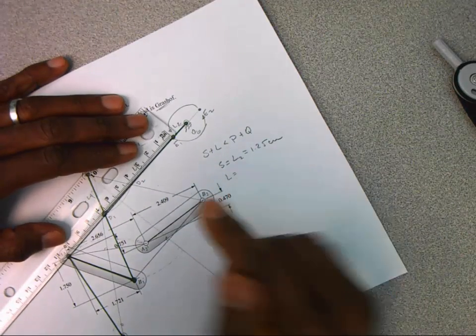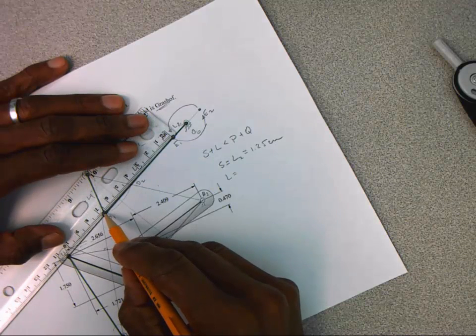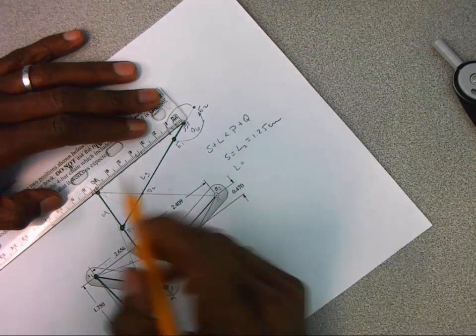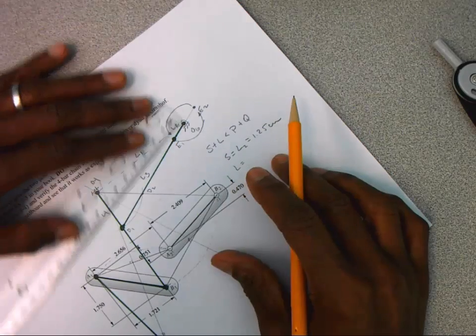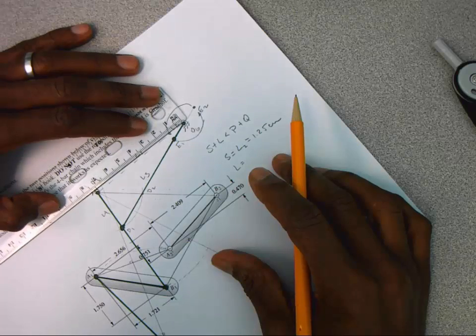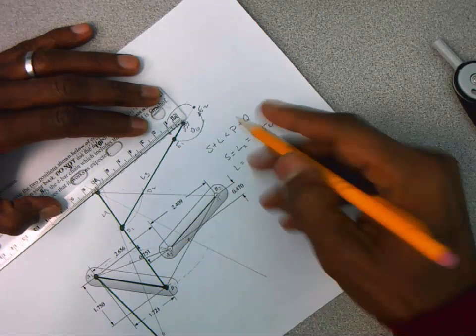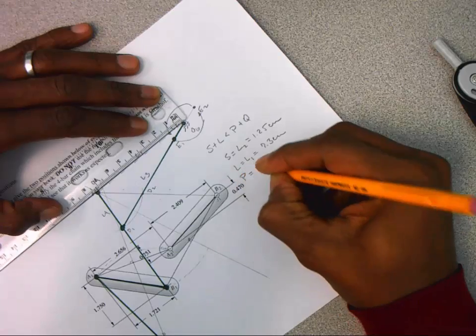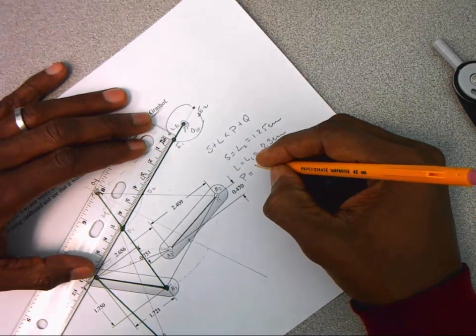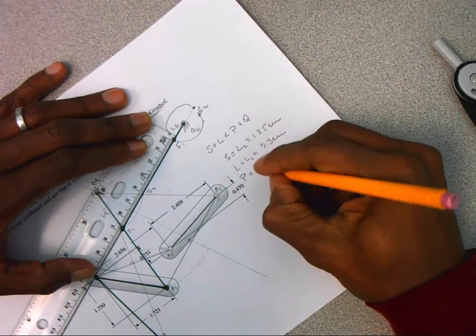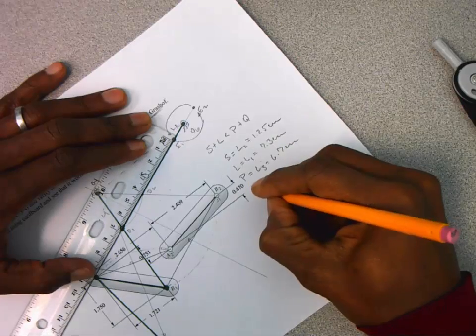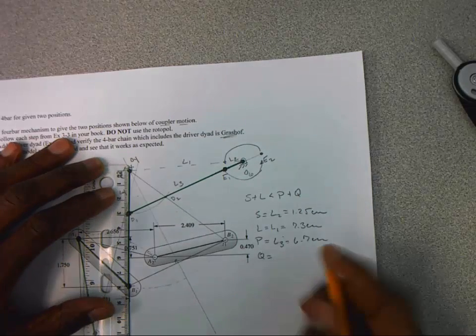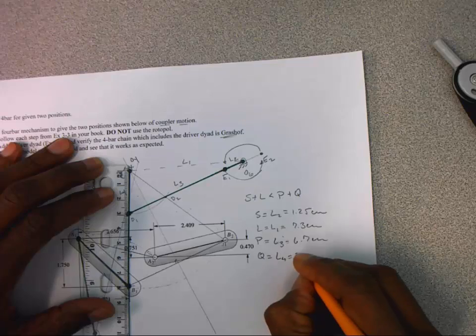Our longest is either the coupler, which looks like it's 6.7, 6.8, or the ground, which looks like 7 point something. So the ground is longer. The ground is 7.3, so that's going to be L1, 7.3 centimeters. And the others are that coupler, which is 6.7 centimeters. And finally, the last one would be my rocker here, which is real close to 3. So L4 is equal to 3.0 centimeters.